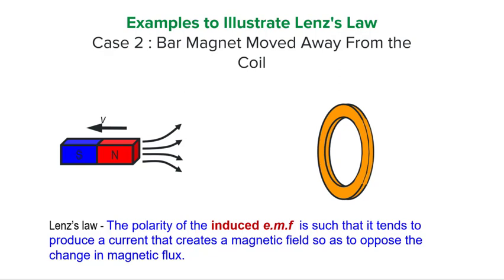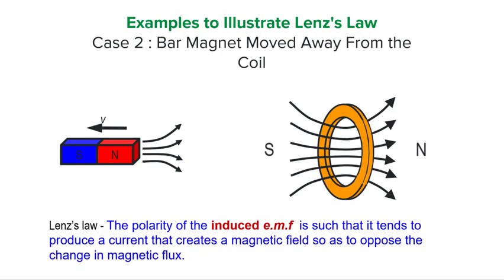So how do we oppose this decreasing flux linkage? The induced EMF will now try to attract back the bar magnet to slow down the decrease in the flux linkage. To do so, it will now set up a south pole to try and attract the north pole back, and a north pole in this direction. Hence, the magnetic field by the induced current in the coil is now from left to right. Using the right-hand grip rule, we can deduce that the induced current is now in this direction.